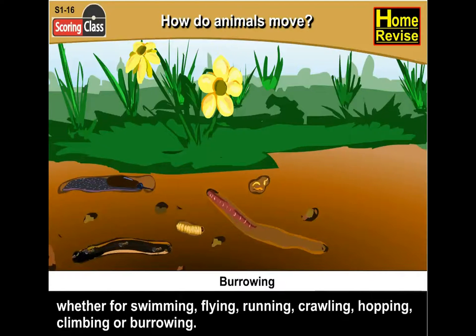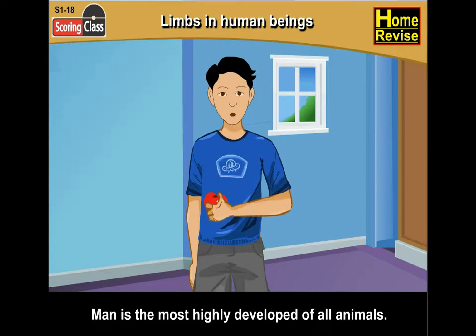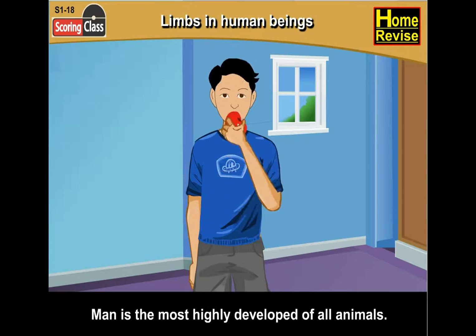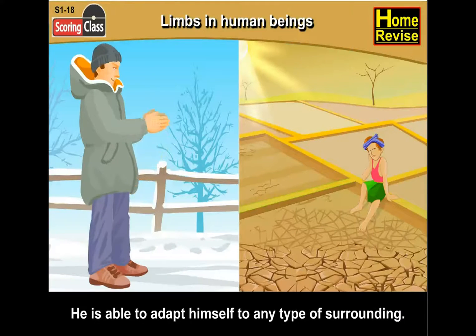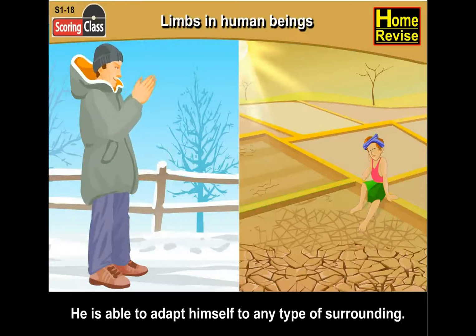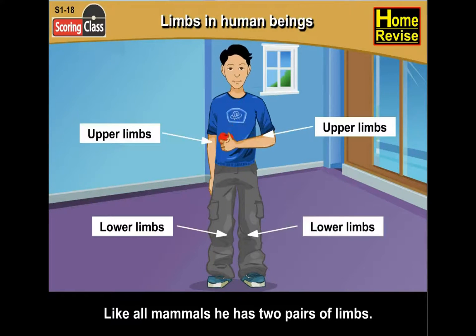How do you move? Limbs in human beings. Man is the most highly developed of all animals. He is able to adapt himself to any type of surroundings. Like all mammals, he has two pairs of limbs.